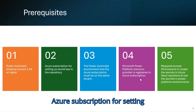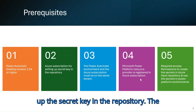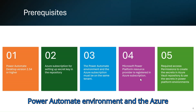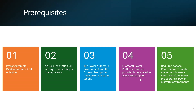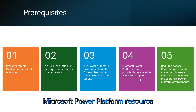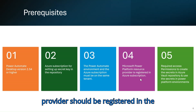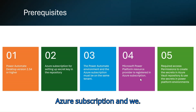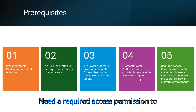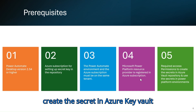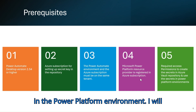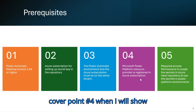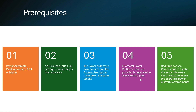Prerequisites are: you need Power Automate Desktop version 2.54 or higher, an Azure subscription for setting up the secret key in the repository. The Power Automate environment and the Azure subscription must be on the same tenant. The Microsoft Power Platform resource provider should be registered in the Azure subscription, and you need the required access permissions to create the secret in the Azure Key Vault repository and to use the secret in the Power Platform environment.